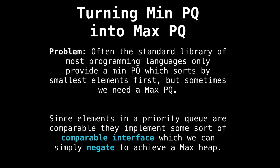So how do we do this? How do we convert one type of priority queue into another type? Well, a hack we can use is to abuse the fact that all elements in a priority queue must implement some sort of comparable interface, which we can simply negate or invert to get the other type of heap. Let's look at some examples.